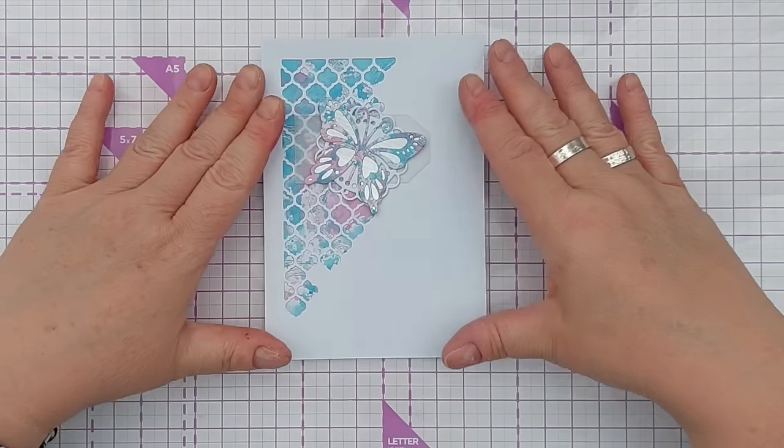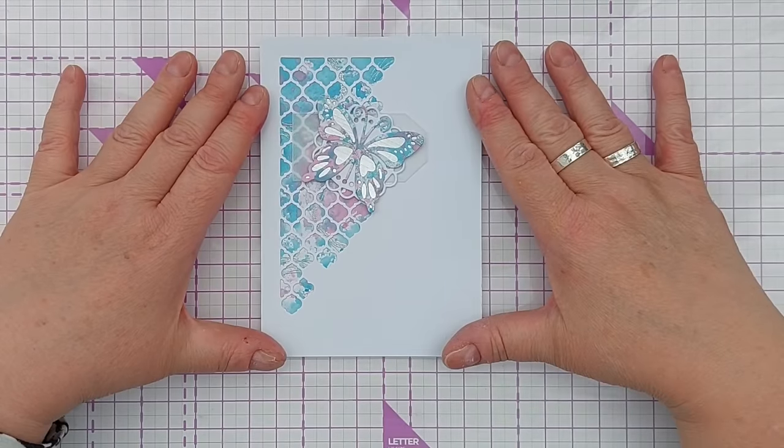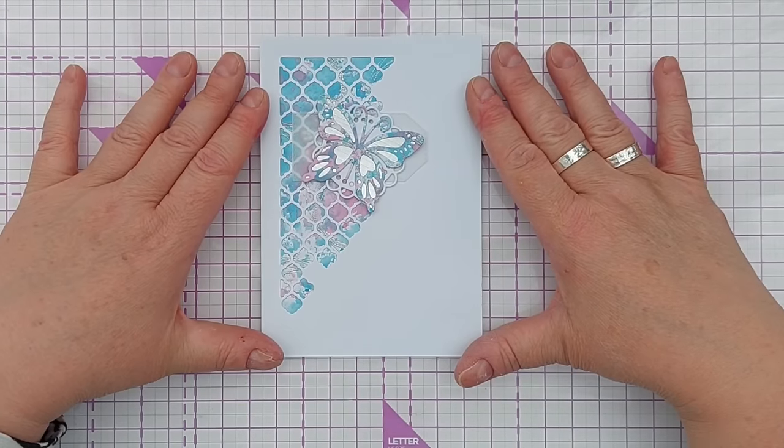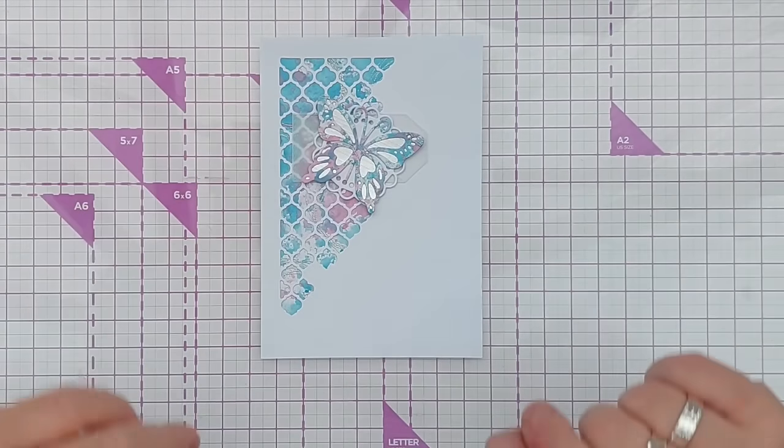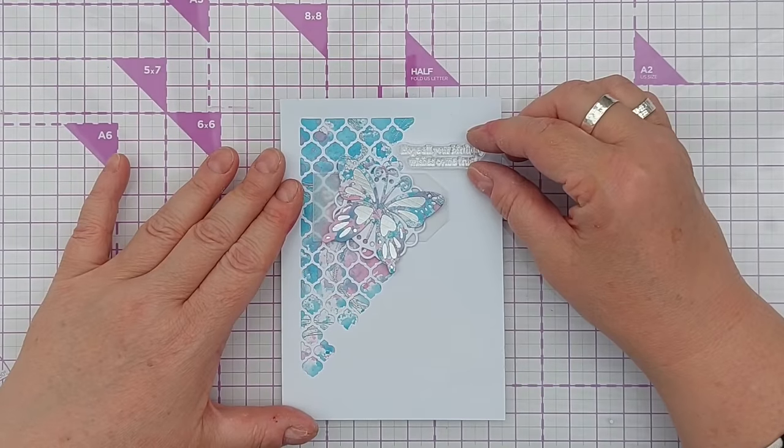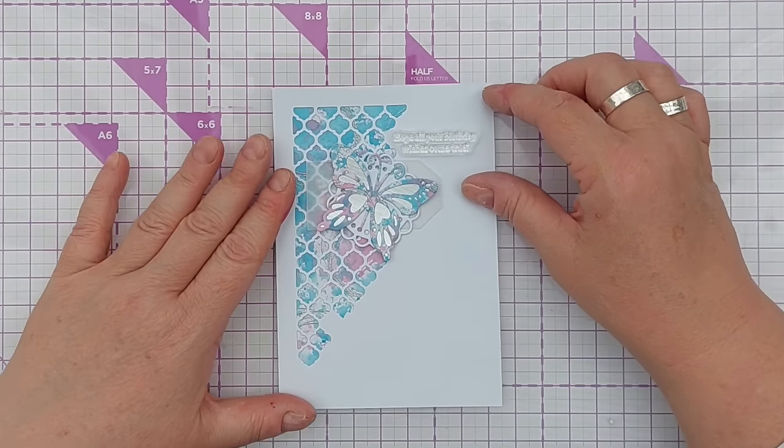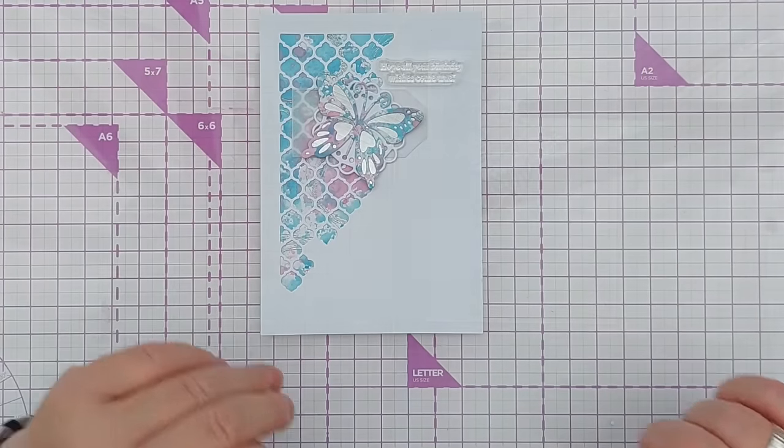So now we've got that assembled. Before I stick this to the front of my card I'm going to add the sentiment because it'll be easier to do it at this stage. I've got this little sentiment that's quite delicate, says 'hope all your birthday wishes come true' and I think it'll snuggle really nicely there.